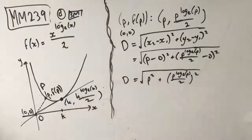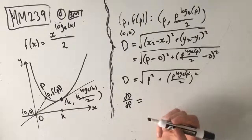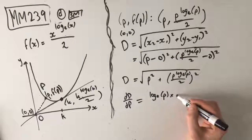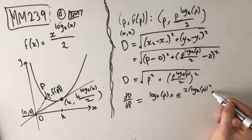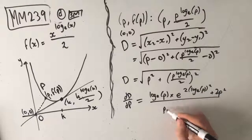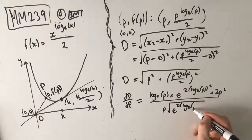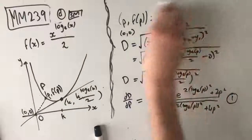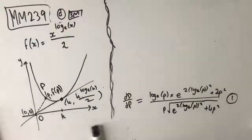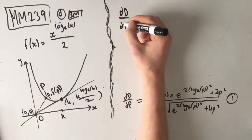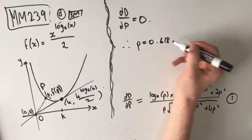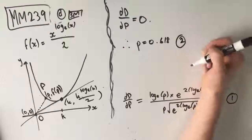We'll solve this on our CAS — we don't want to do this by hand, that's going to be a massive pain. According to our CAS, the derivative d with respect to P is: log e of P times e to the power of 2 log e of P squared plus 2P squared, over P times e to the power of 2 log e of P squared plus 4P squared. That's our first mark — finding that derivative. Since the derivative equals 0 at the minimum, solving in CAS gives P equals 0.618. That's our second mark.